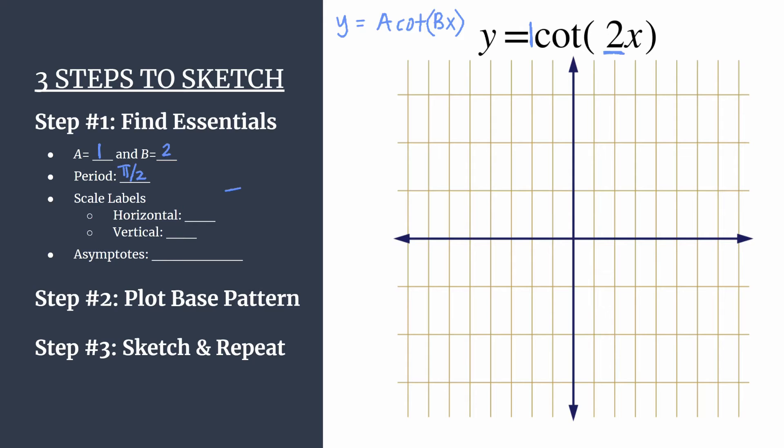And remember, period is just the length of a horizontal cycle. So now that we have the period, let's go ahead and choose how to label our axes. So horizontal scale is really important here. You can choose how to label your tick marks however you want. But with three steps to sketch, I think it's really easiest to be intentional about this.